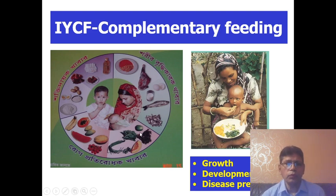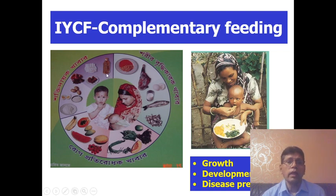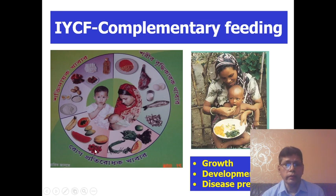Balanced food incorporates energy-yielding food — for example rice, wheat, sugar, oils — body-building food such as fish, meat, and milk, and disease-preventive food such as fruits and vegetables.